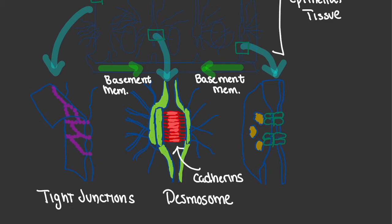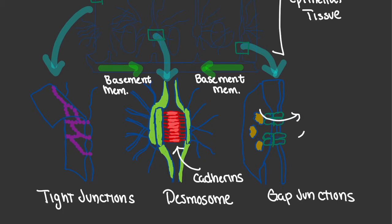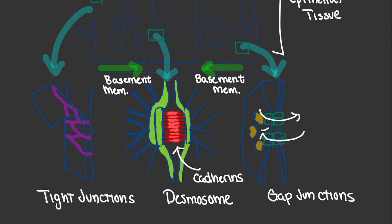Our third intercellular connection is what we refer to as gap junctions. What these gap junctions represent are channels by which things can pass either into or out of the epithelial tissue — they're essentially highways that allow things to either enter or exit.